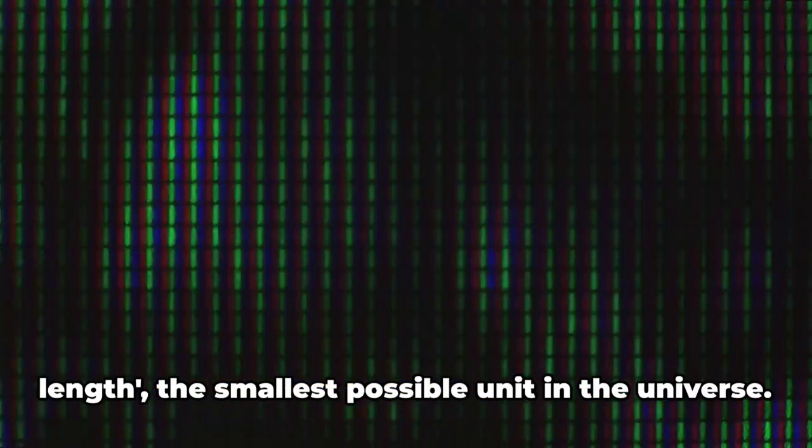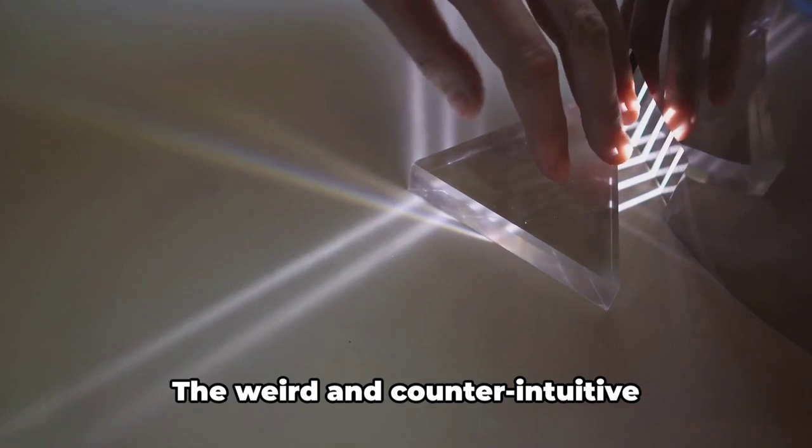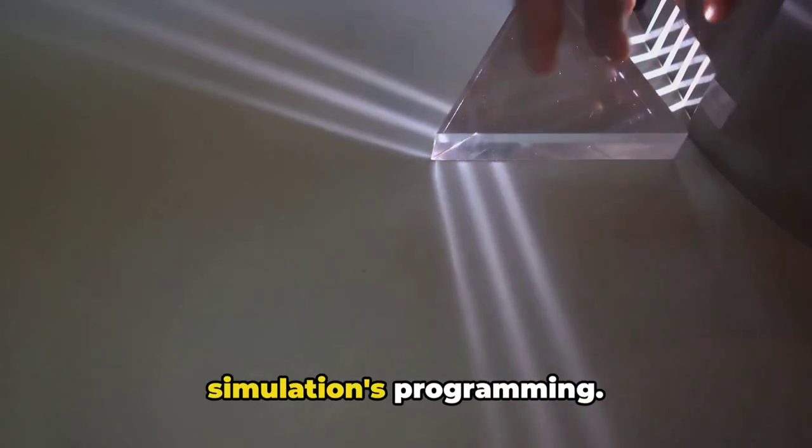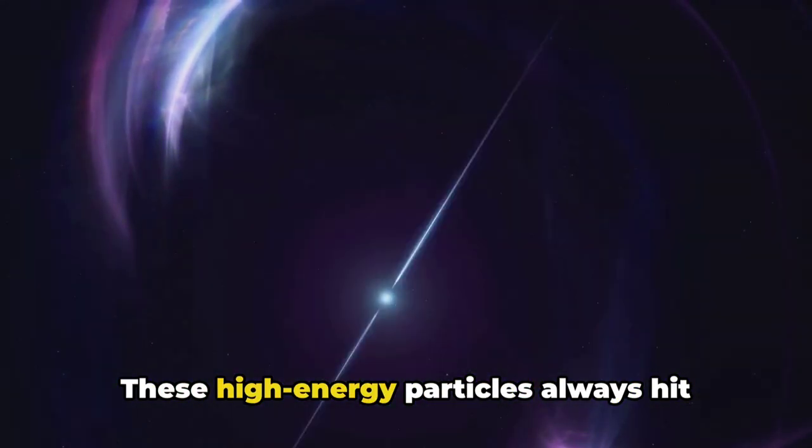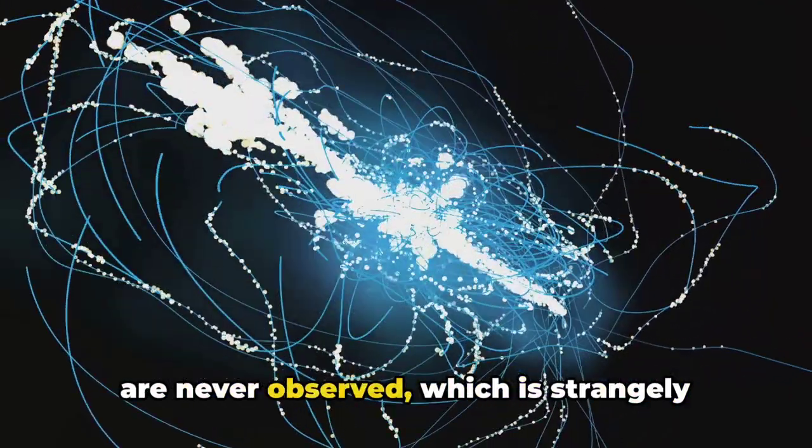Then there's the idea of the Planck length, the smallest possible unit in the universe. It's essentially the pixel size of the universe. If the universe was a continuous flow of matter and energy, why would there be a limit to how small things can get? This pixelation of the universe could be a sign of a simulated reality. The simulation hypothesis also finds support in the field of quantum mechanics. The weird and counterintuitive behaviors of particles at the quantum level could be bugs or quirks in the simulation's programming. Moreover, the concept of cosmic rays also supports this hypothesis. These high-energy particles always hit Earth with a maximum energy level. Above this cut-off point, cosmic rays are never observed, which is strangely reminiscent of a computer system with a maximum limit.